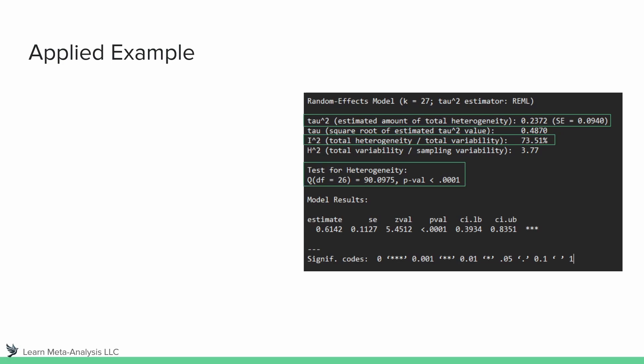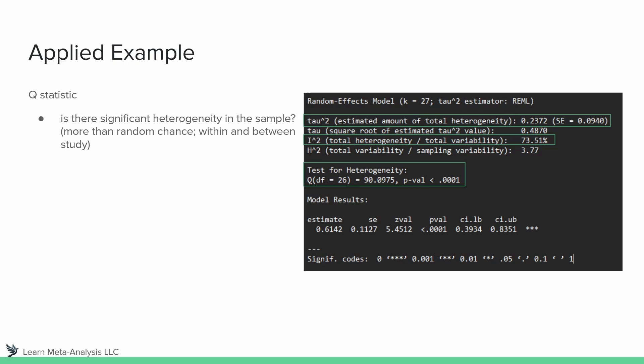Let's get back to practical application now and look at some output from metaphor in R. On the right-hand side, I have highlighted in green the statistics we're going to be looking at. The first one is our Q statistic — we have degrees of freedom and a p-value. We're looking for p less than 0.05 to indicate significant heterogeneity, which includes both within and between-study heterogeneity. In this case, p is less than 0.05, so yes, there is significant heterogeneity in the sample.